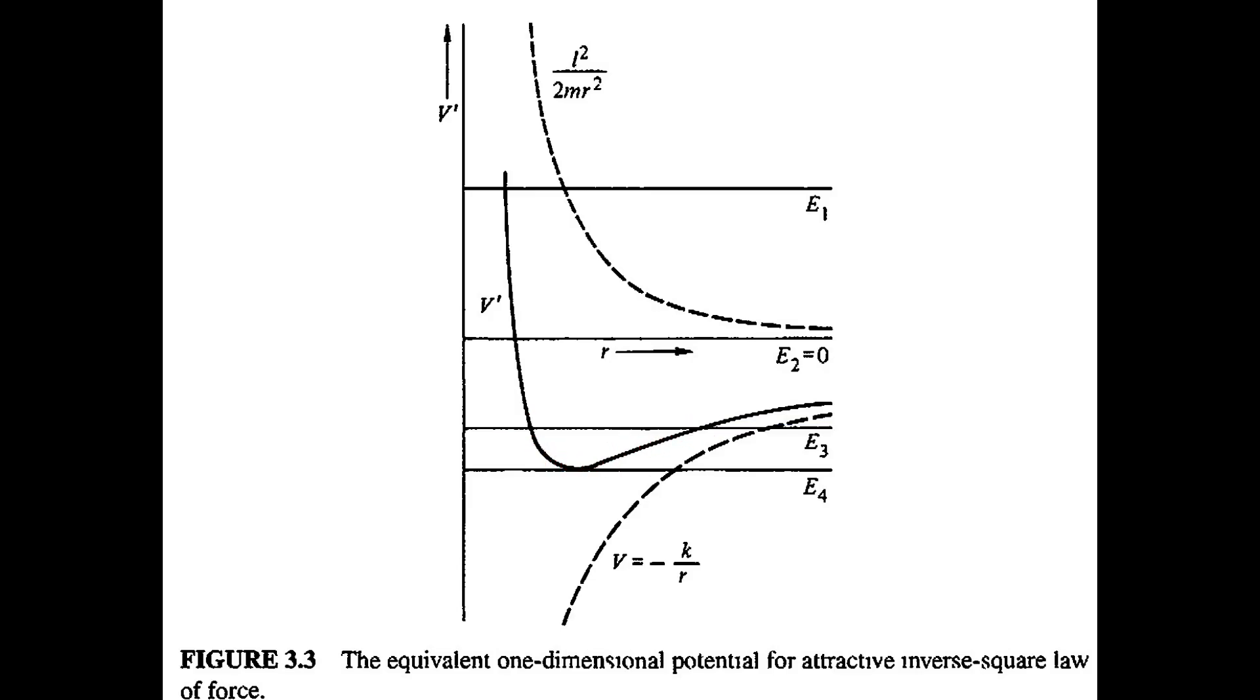From this graph, we can imagine three types of orbits. If the energy is above the maximum potential at large distances, this is an unbound orbit. The particle will come in, it will get close to the object, and then it will go out. And it will keep leaving forever because it will never encounter another turning point.